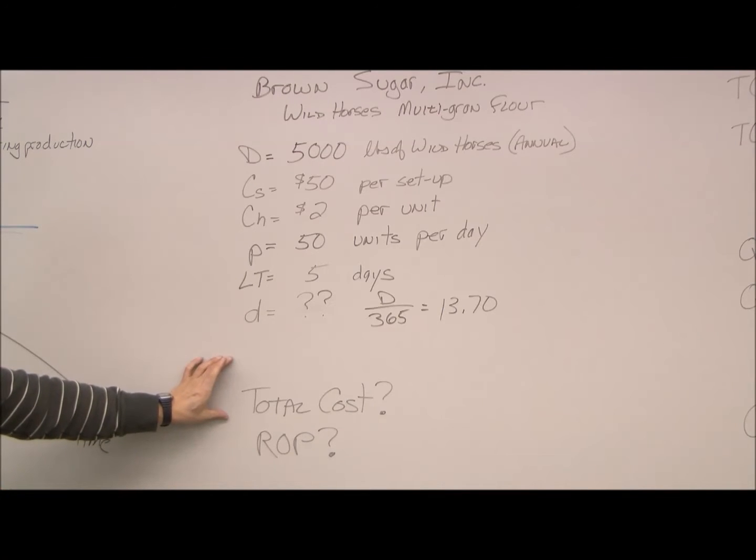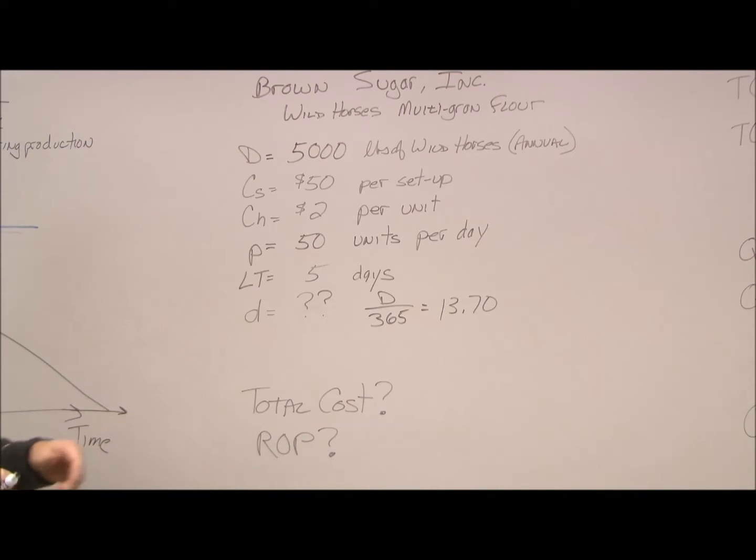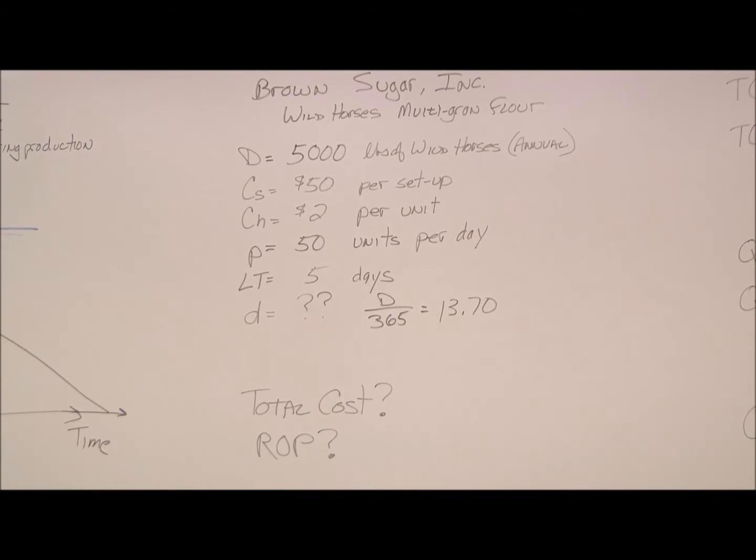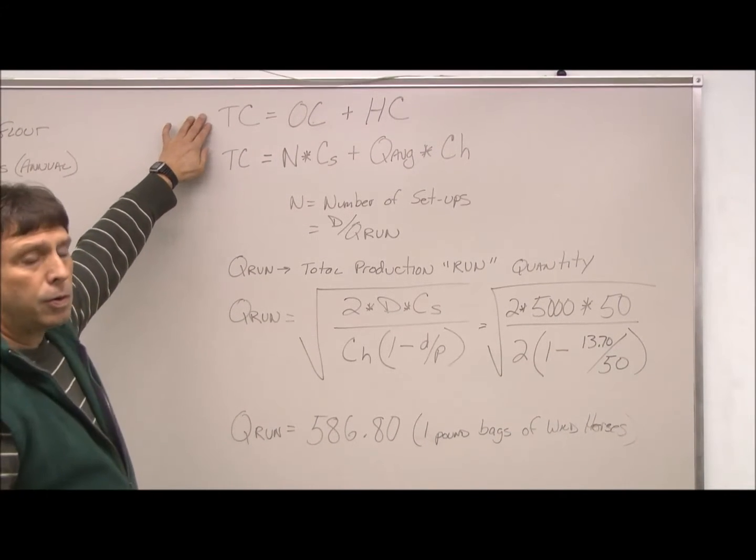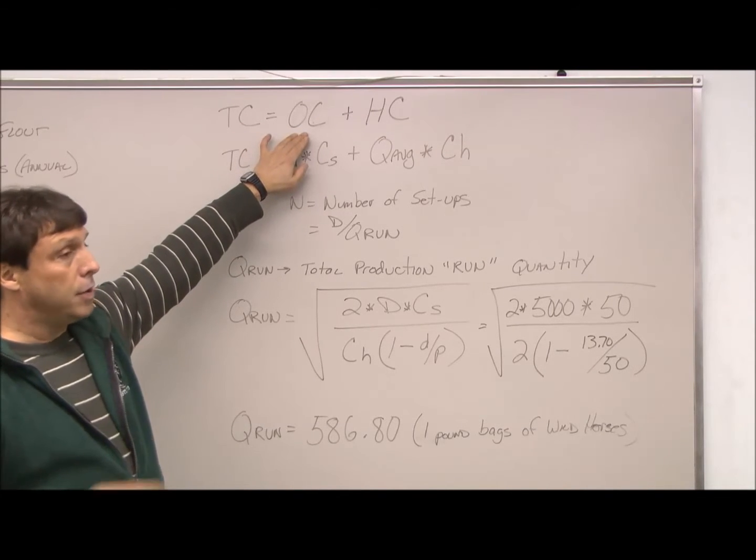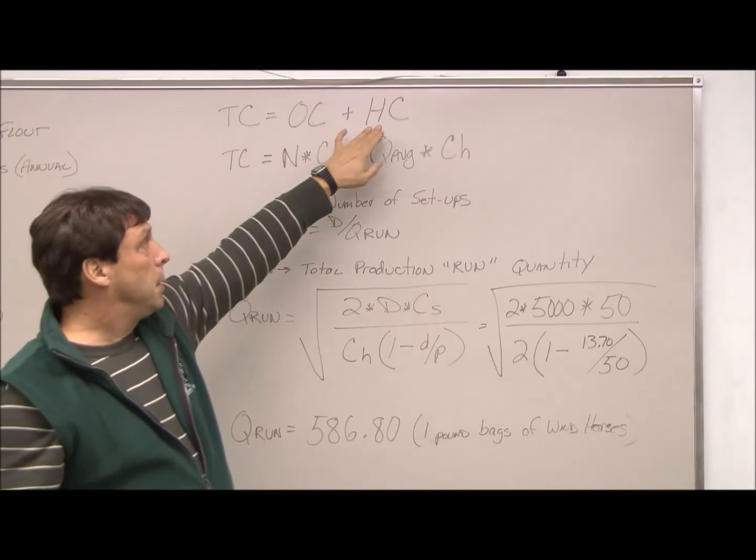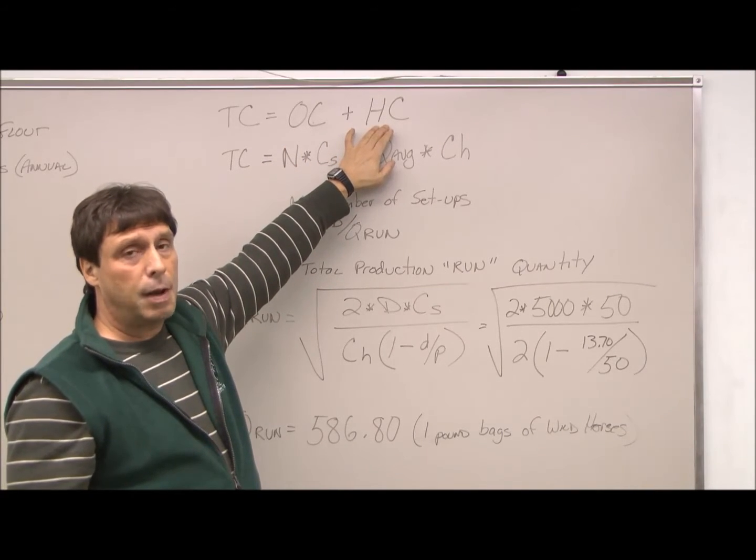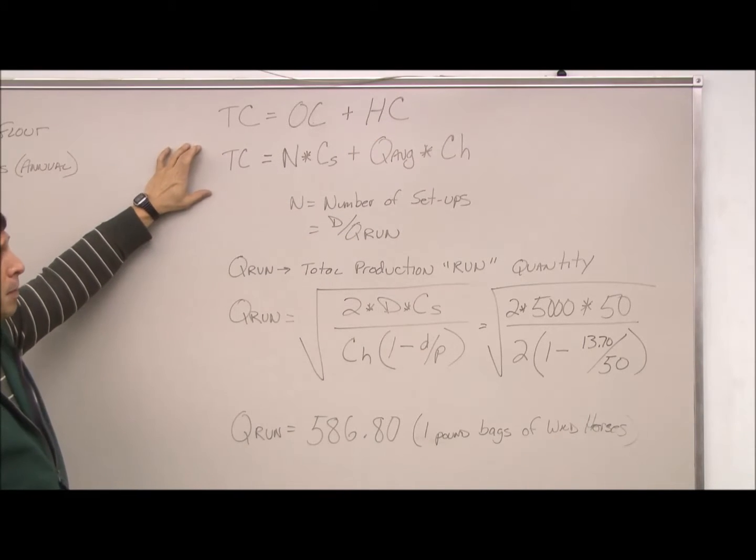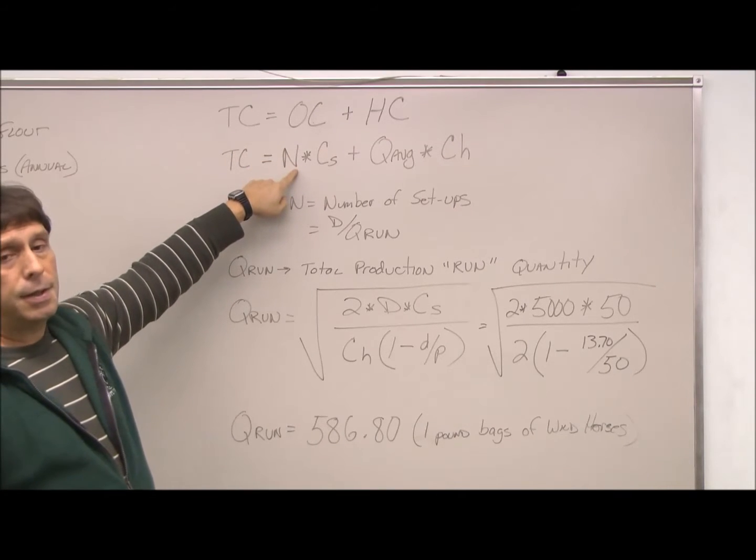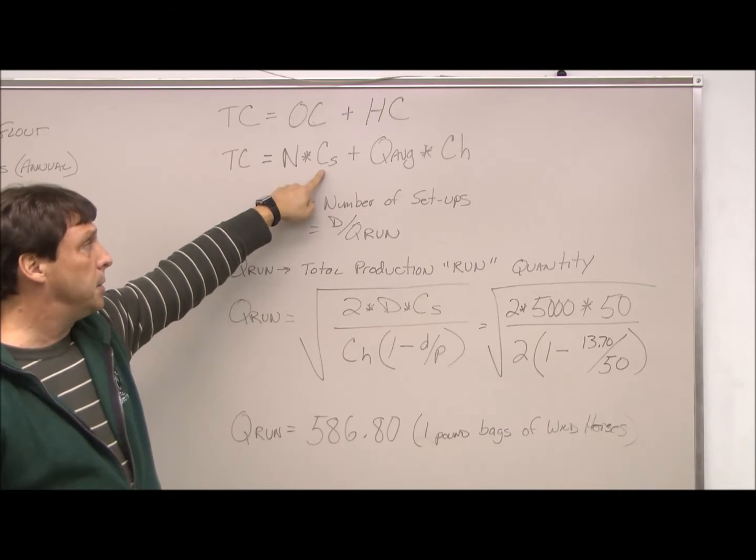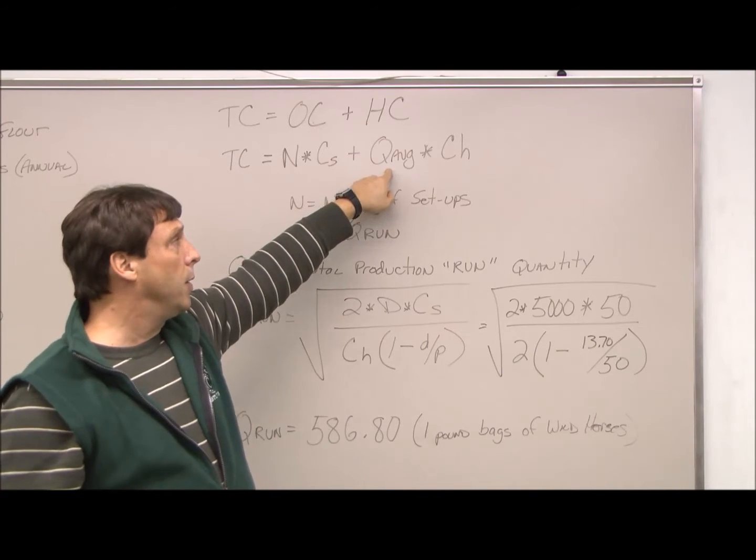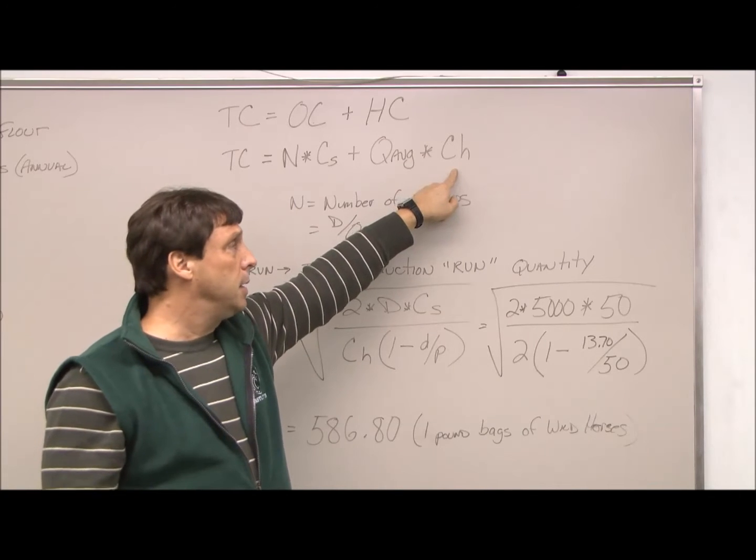The problem asks for what are the total costs and what is the reorder point. Our total cost, and this is an annual total cost, is our total ordering cost or total setup cost plus our total holding cost or how much it takes us to hold inventory. If we break the formula down, we know that ordering cost is the number of setups times the per unit charge for setups. Our holding cost is our average inventory level times how much it costs to keep each one in inventory.